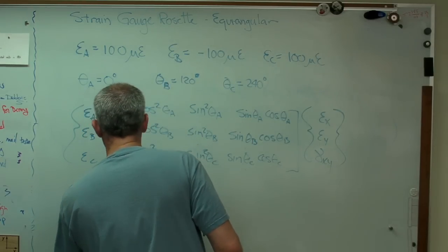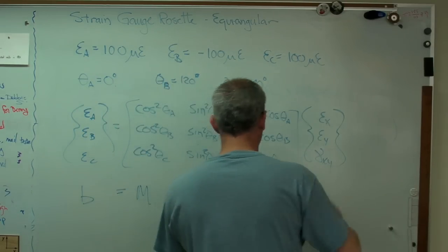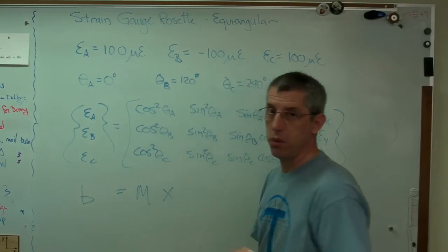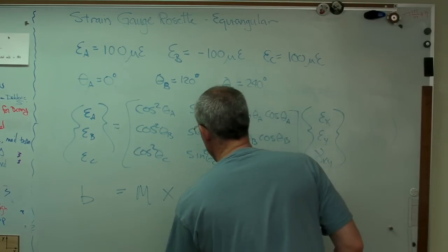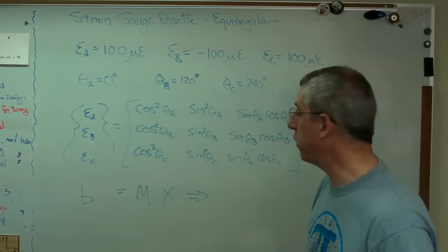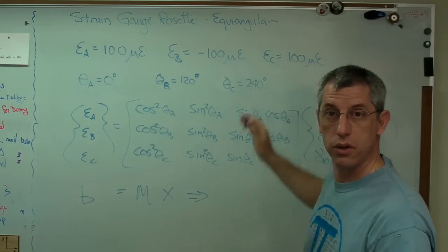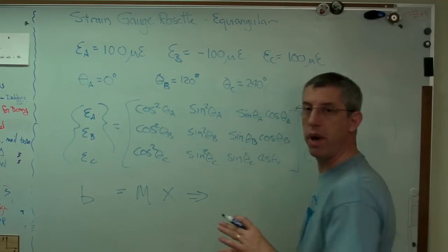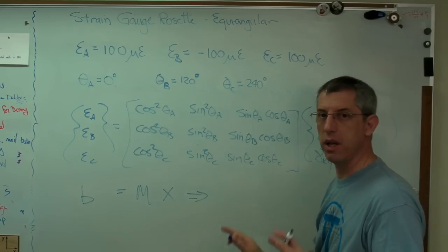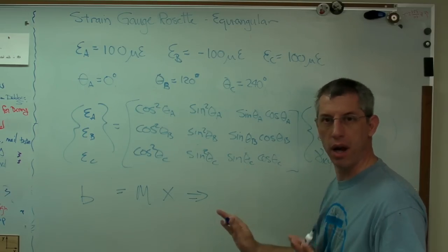Well, if I call that B, maybe that M, and that X, boy, that sure looks like a matrix equation to me. Now, if you don't know what matrices are, don't let that freak you out. You could go to that earlier problem that I had written out and solve it using substitution if you like. Mathematically, exactly the same thing. You'll get exactly the same answer. Not a problem. But if you do happen to know what matrices are, that's what I'm going to do here in a second.